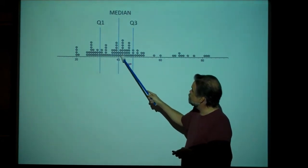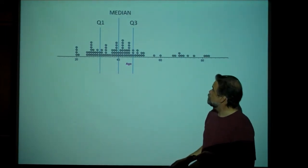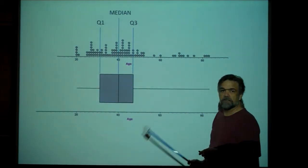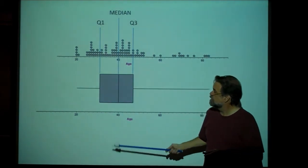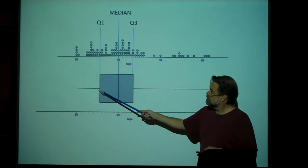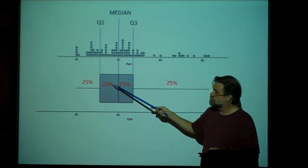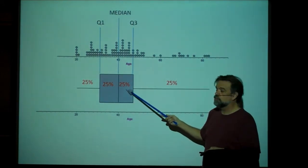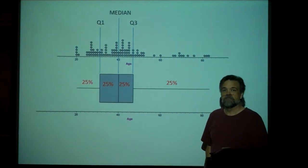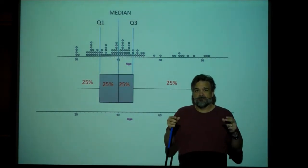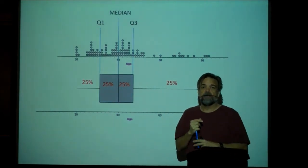And these three values along with the minimum and the maximum are what we use to create our box plot. Also known as a box and whisker plot. This whisker has the lower 25% of the data. This left-hand part of the box has 25% of the data. The right side of the box has 25% of the data.